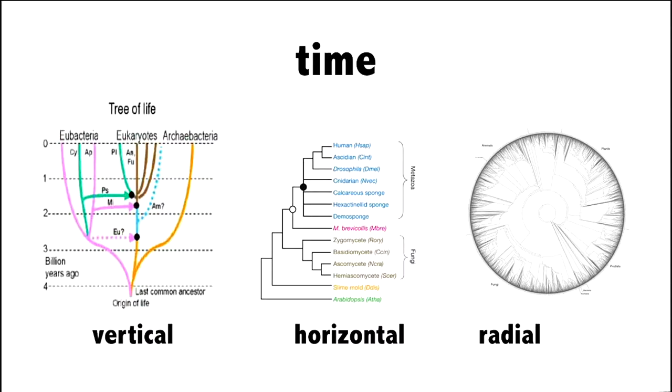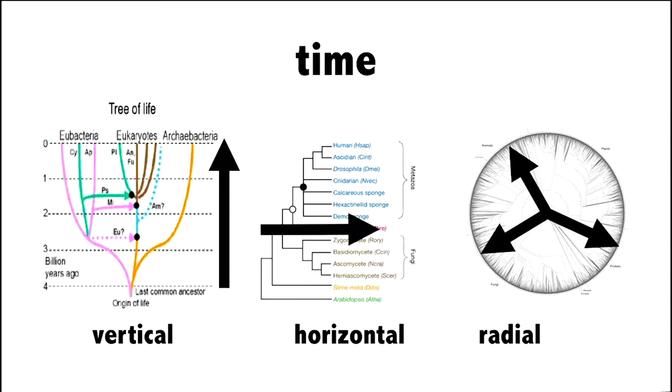Now, speaking of time, you'll see a whole variety of different types of trees. On the tree on the left, time goes vertically. The tree in the center, we have horizontal time. And the tree on the right, time starts in the middle and then goes radially, where the present is at the outer circumference.